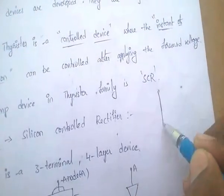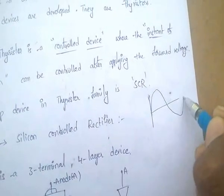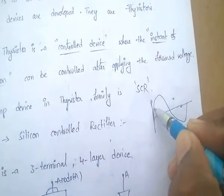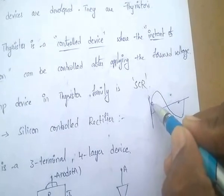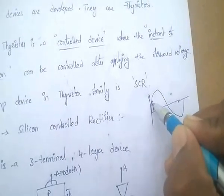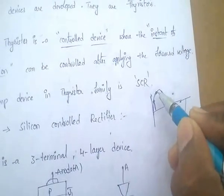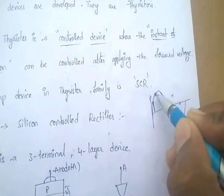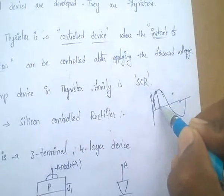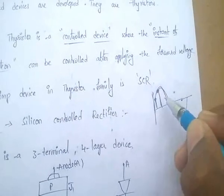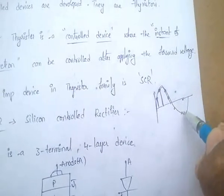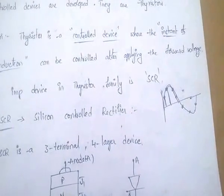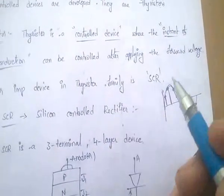If the input is like a sine wave, we can control the instant of conduction. If we want conduction from a certain point, we can give the gate pulse there and get the output from that instant. In this way we can control every instance — this point, or any point — and get the output from that controlled point.